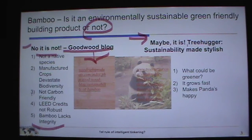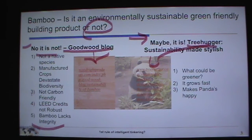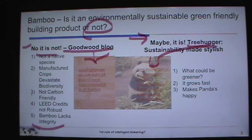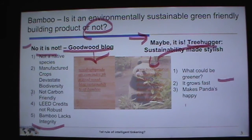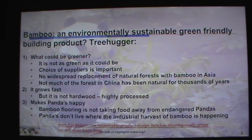On the other hand, the Treehugger blog says maybe it is sustainable. What could be greener than bamboo? It grows fast, takes carbon out of the atmosphere, and is not displacing other species. It grows fast — and it makes pandas happy.